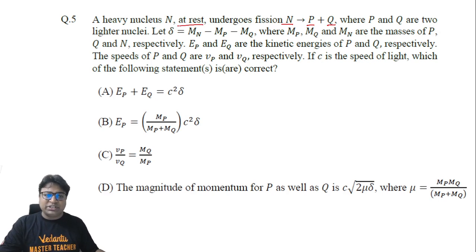N was initially at rest. P and Q are lighter nuclei, and delta denotes MN minus MP minus MQ, which means delta is the mass defect. The energy liberated in this reaction will be equal to c²δ, and this energy will be liberated in the form of kinetic energy of the daughter fragments.